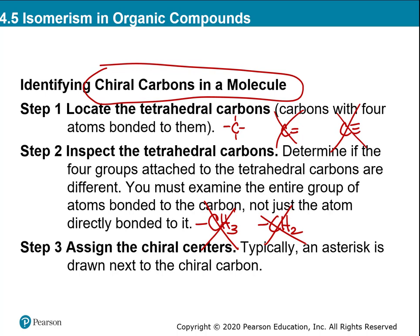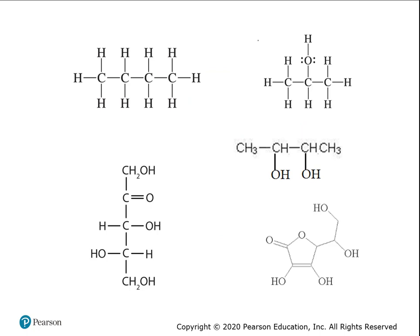That honestly knocks out most carbons in an organic molecule, because the majority have two or three hydrogens. The only way to find a chiral carbon is if the group above, below, left, and right are all different. Now let's practice: looking at butane, are there any chiral carbons?